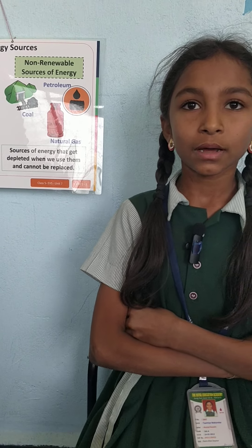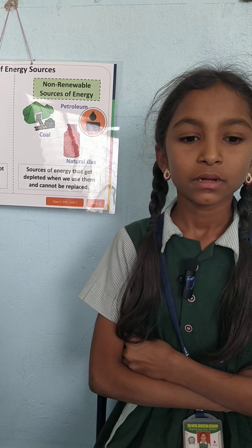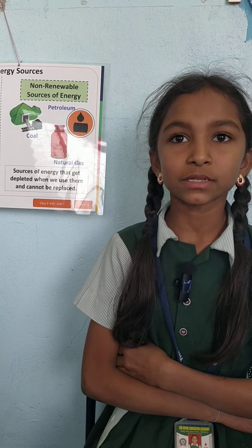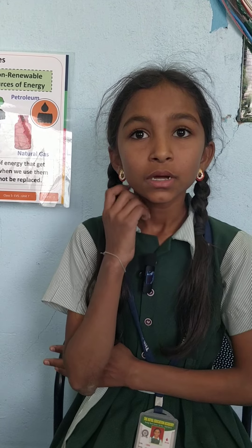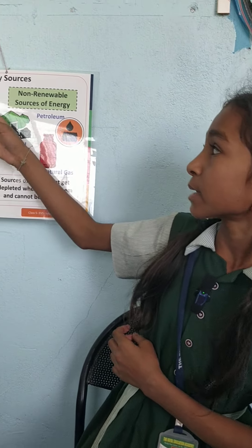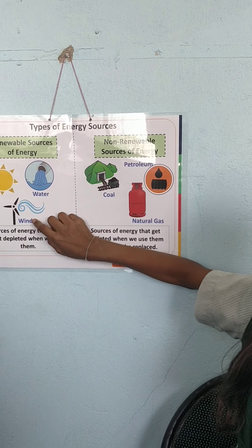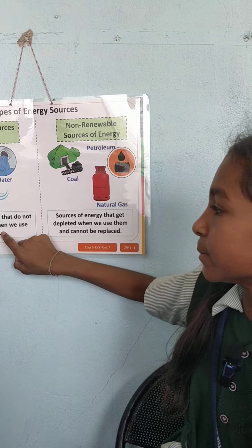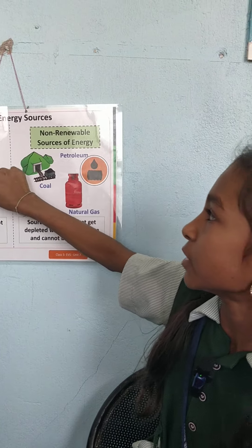My name is Taseem Akamra and today I am talking about types of energy sources. Renewable sources of energy — examples: sun, water, wind — are sources of energy that do not get depleted when we use them. It is called renewable sources of energy.